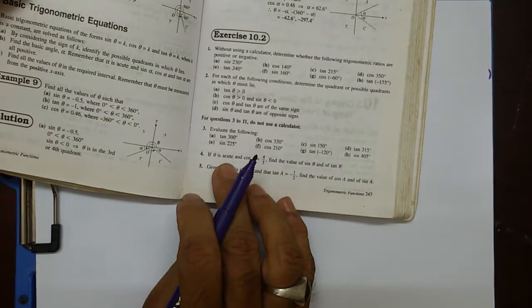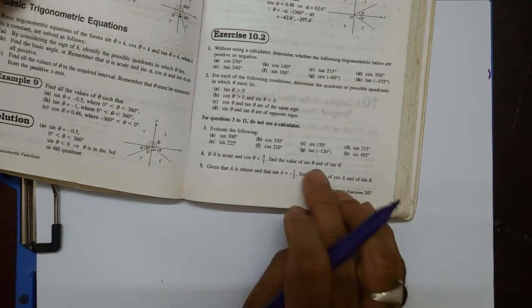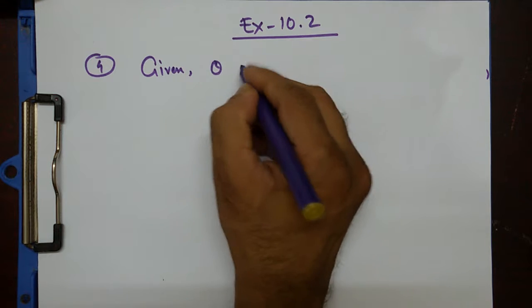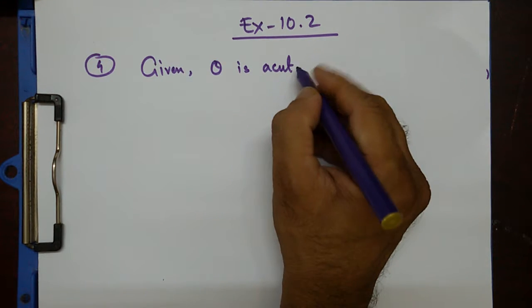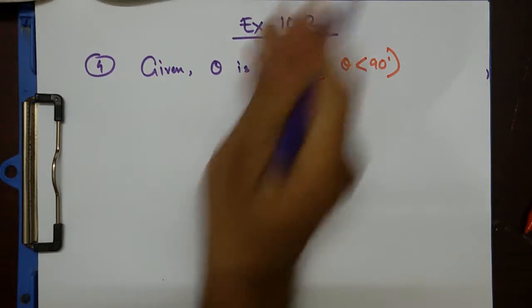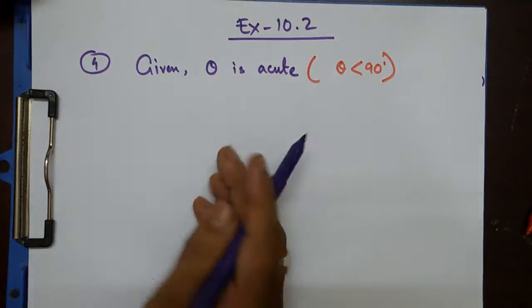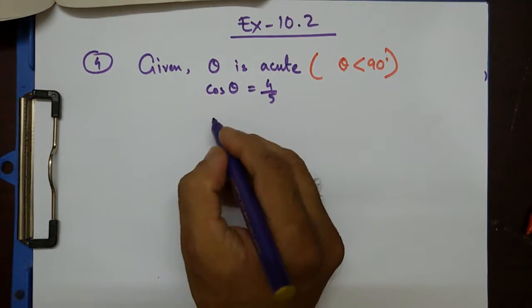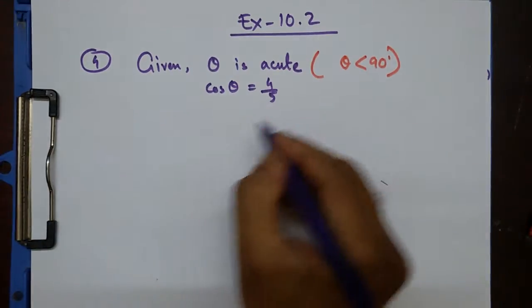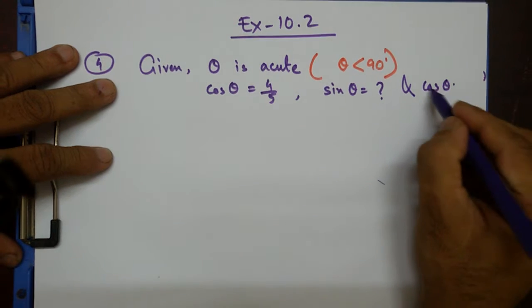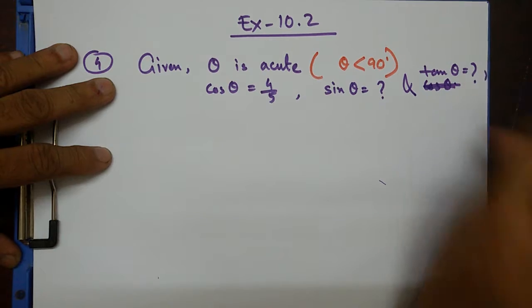Let's do question number 4 first. It says that if theta is acute and cos theta equals 4 by 5, find the value of sine theta and of tan theta. Given: theta is acute, meaning theta is less than 90 degrees. And another piece of information given is cos theta equal to 4 by 5. So we need to find sine theta and tan theta.